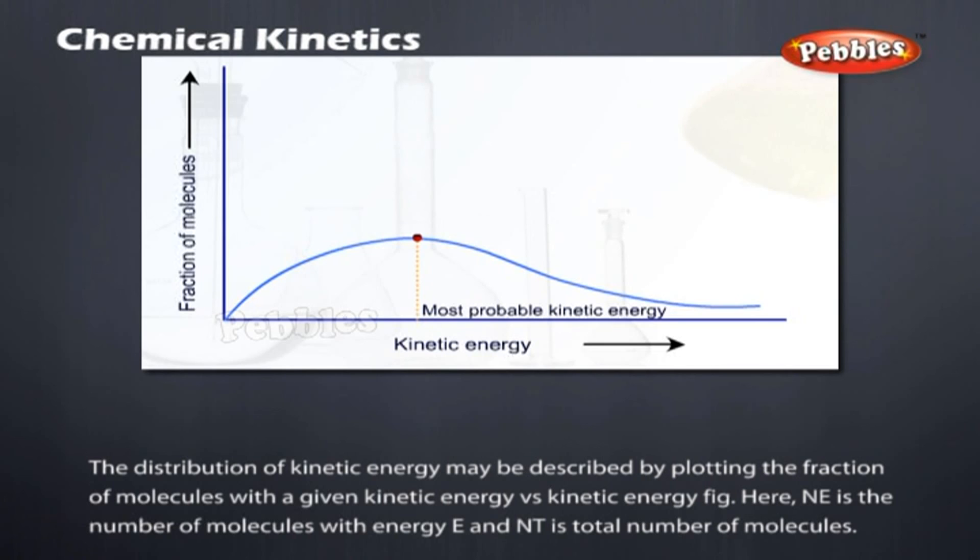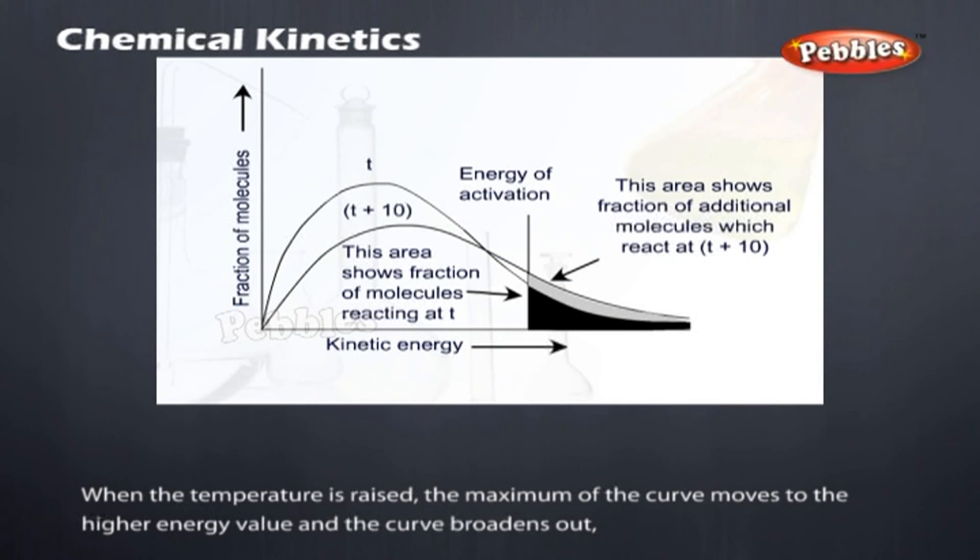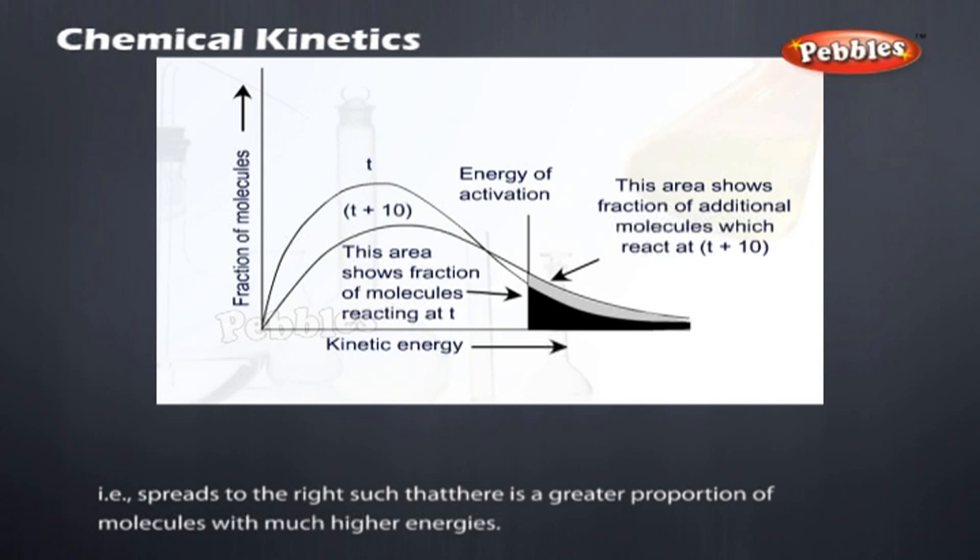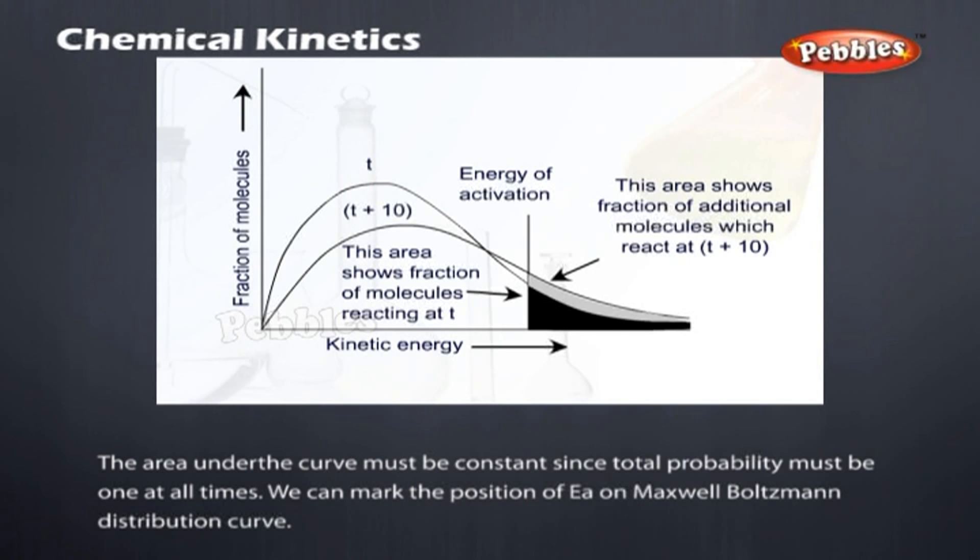NE is the number of molecules with energy E and NT is total number of molecules. When the temperature is raised, the maximum of the curve moves to the higher energy value and the curve broadens out, that is, spreads to the right such that there is a greater proportion of molecules with much higher energies. The area under the curve must be constant since total probability must be one at all times. We can mark the position of EA on Maxwell-Boltzmann distribution curve.